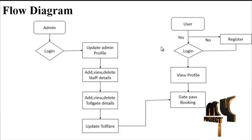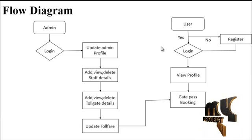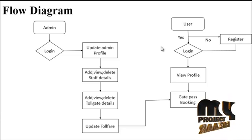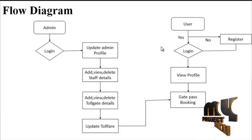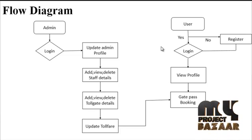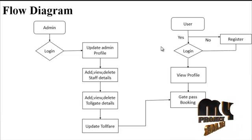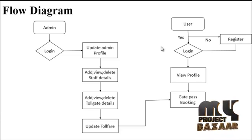Let's see the admin process step by step. The admin model will manage the Tollgate process. This contains the following Tollgate details: admin will perform add and delete Tollgate details, which include Tollgate name, Tollgate location, postal code, mobile number, email ID, and Tollgate image. Admin will also add staff details and perform add, view, and delete staff details through the system. Admin will also update the Toll fare every year.